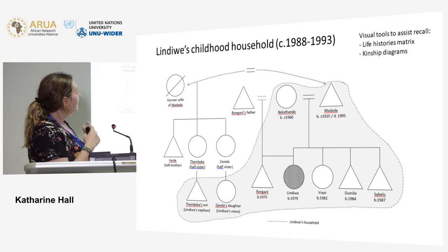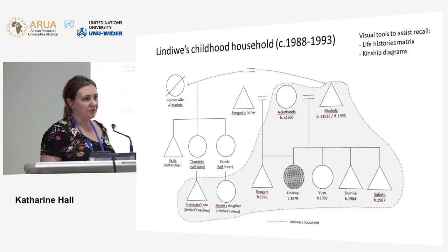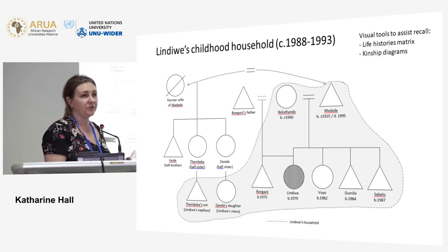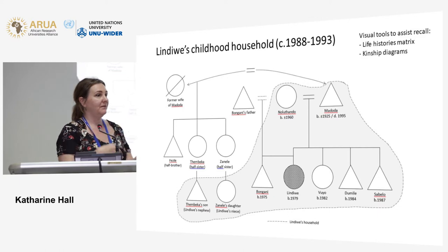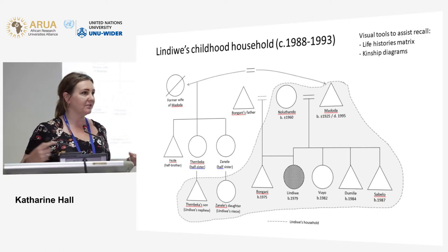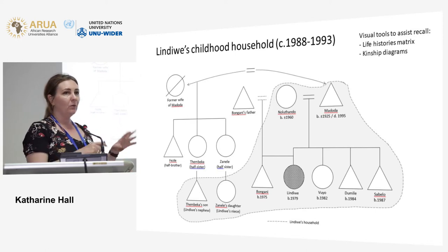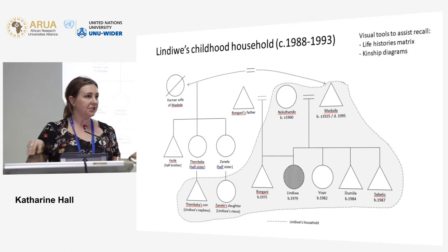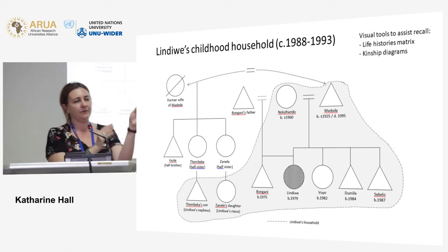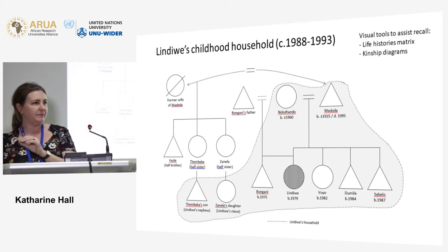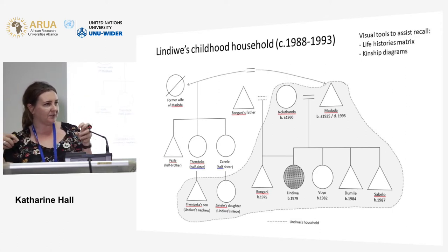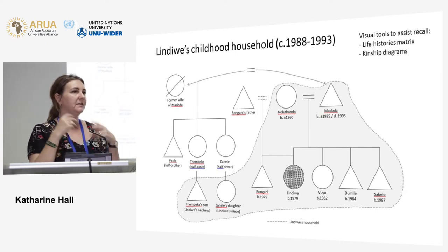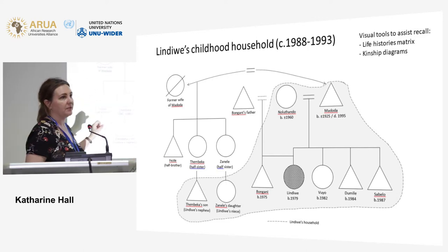I wanted to talk partly about method and the usefulness of doing this kind of research. Problems of recall happen in qualitative research too — the initial story I got changed every time we spoke and was contradictory. Two main methods assisted recall: first, a family history grid with columns for each person and rows for each year, which we'd fill in together, working through inconsistencies to refresh memory; second, kinship diagrams.